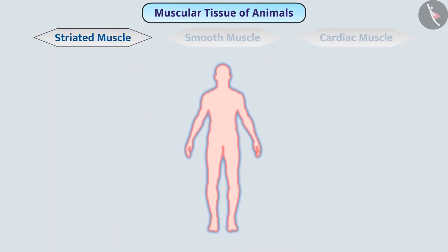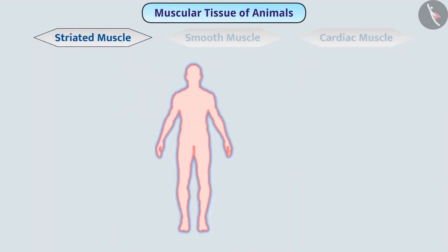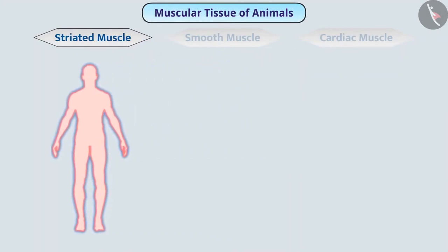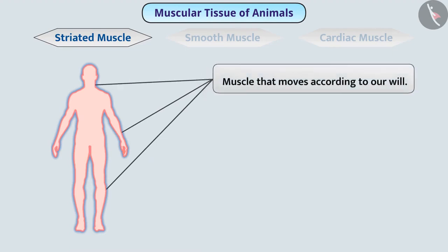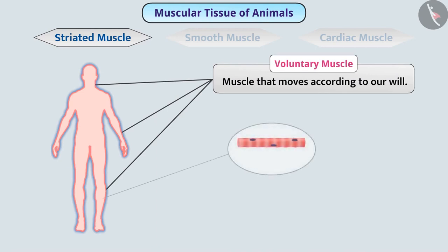We can move our hands, feet, and neck as per our wish. This means that the muscles present in these organs move according to our wish. The muscle that moves according to our will is called voluntary muscle. When observed with the help of a microscope, alternate bands of dark and light colors are seen in this muscle. That is why it is also called striated muscle.